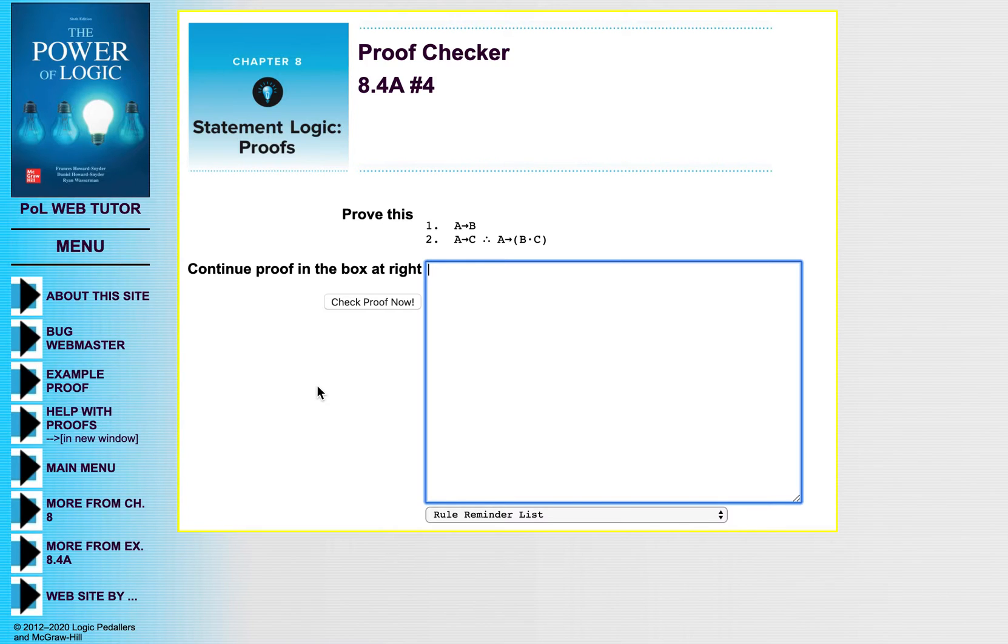Alright, so for this one, let's put our conclusion down here. If A, then parentheses B and C. And we know that we are going to prove this by CP. We don't know yet which lines we're gonna use because we don't know the number of lines. We do know that it's gonna be actually starting in line three because we're gonna assume right away.